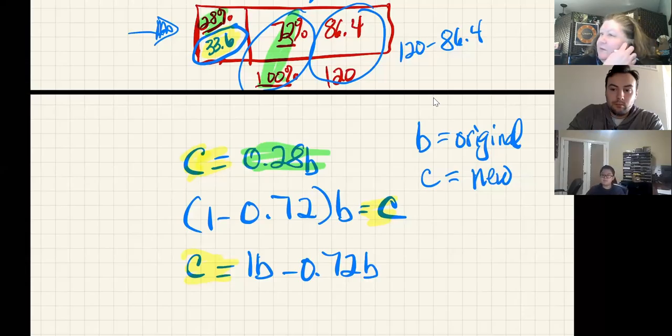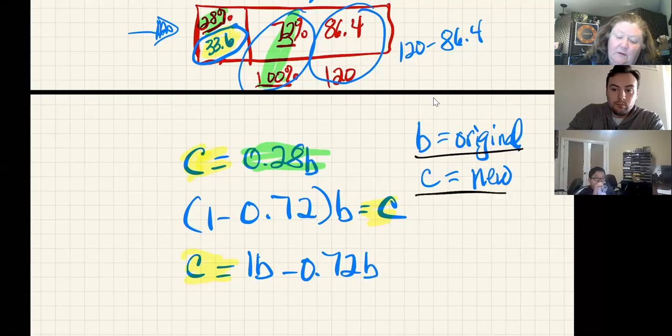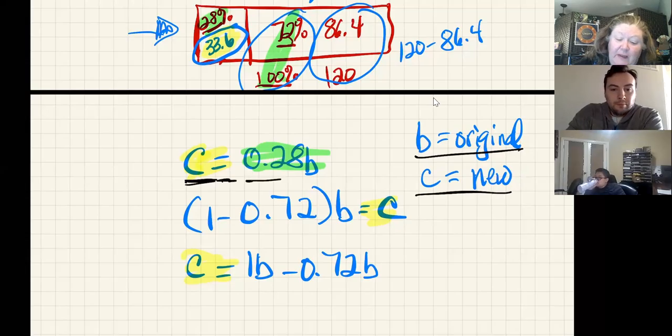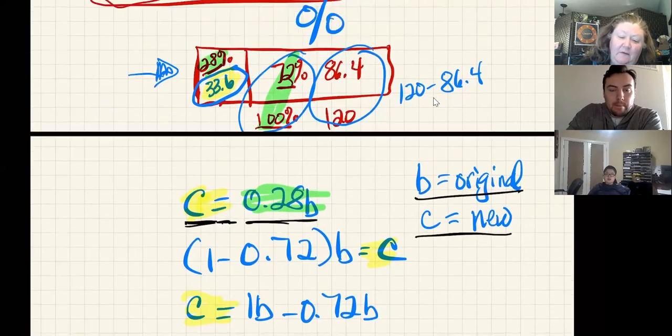As we're looking at these three equations, b is equal to the original, c is equal to the new. So what we're saying in this first equation is the new bar is equal to 0.28 times the old bar or the original. That goes back to what one of your classmates said in the chat at the very beginning.